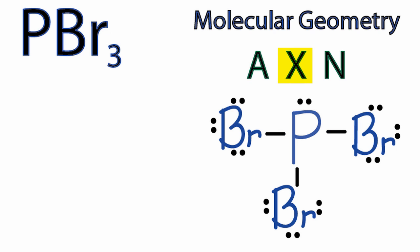X, that's the number of atoms attached to that phosphorus, and we have the three bromine atoms. We'll put our three right here. And N, that's the number of lone pair or unbonded electron pairs. We have only one of those on top of the phosphorus.